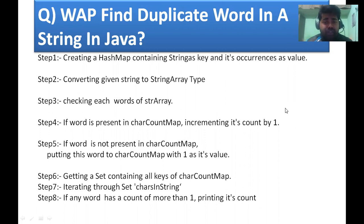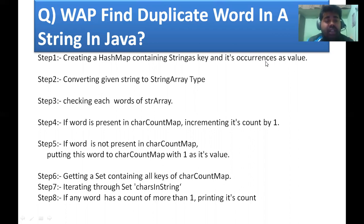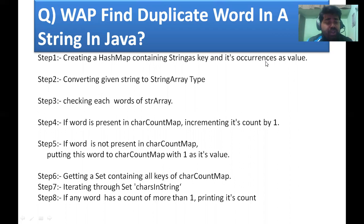Using a HashMap is the simplest approach. Step one: create a HashMap with String as the key and Integer as the occurrence. Step two: convert your sentence into a String array using the split method, which splits a String into a String type array.